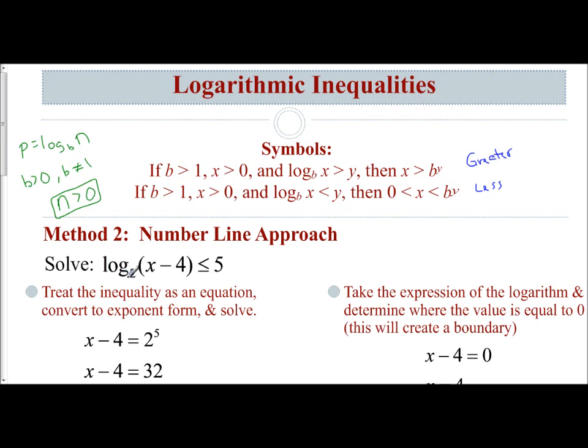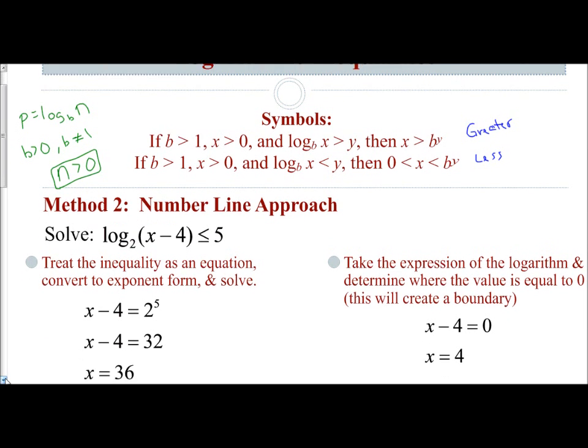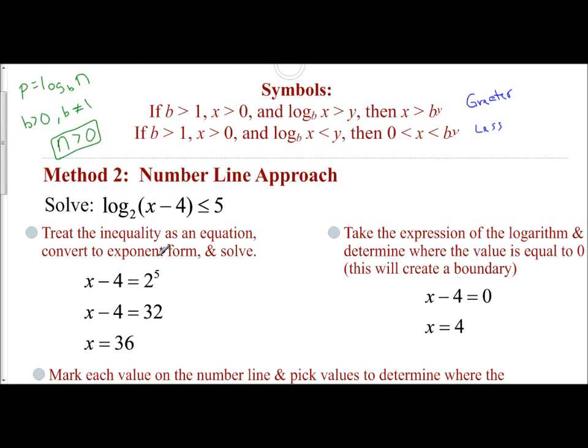If we have log base 2 of x minus 4 is less than or equal to 5, with this number line approach, what you do is treat the inequality as an equation, convert it to exponent form, and solve. So I have my expression, x minus 4, equals my base 2 to the power of 5. So x minus 4 equals 32, x equals 36.